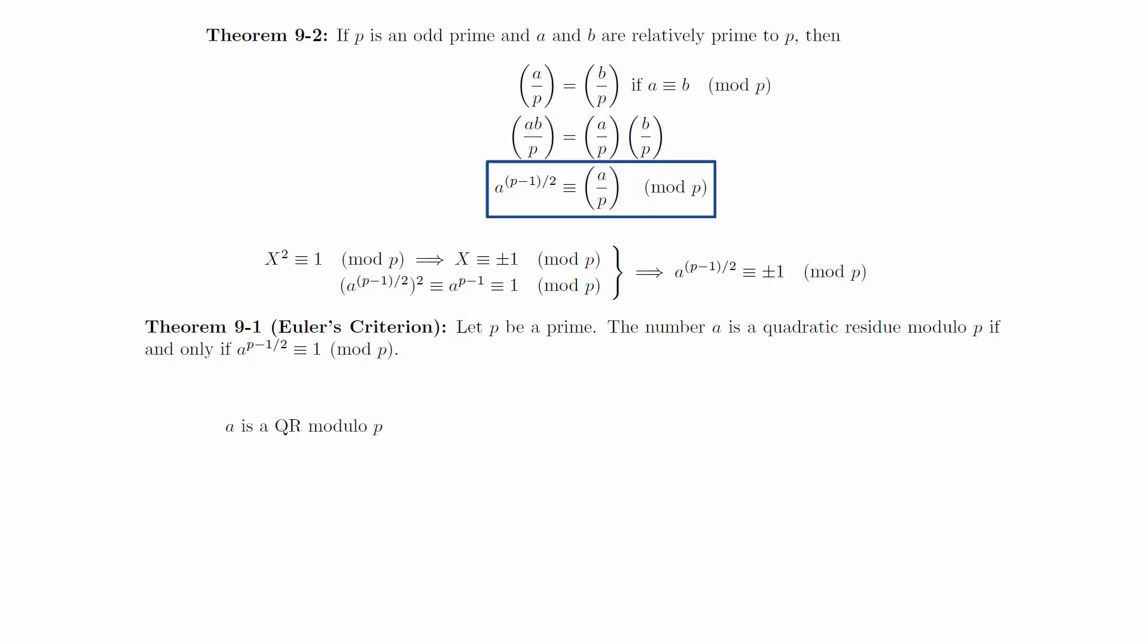If a is a quadratic residue modulo p, then the Legendre symbol is equal to 1, and Euler's criterion directly tells us that a to the p minus 1 over 2 is congruent to 1 modulo p, which gives us the result.